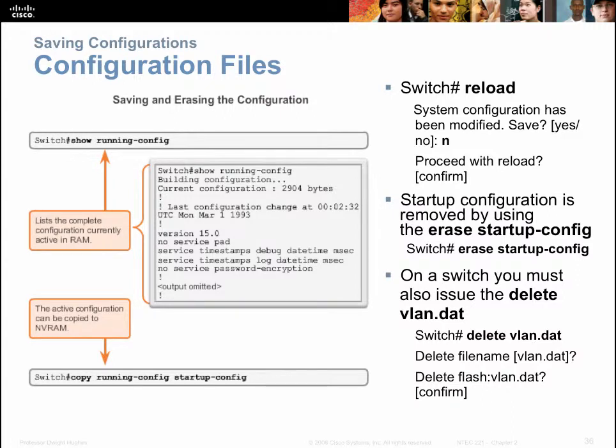The running config is the configuration file that sits in RAM — volatile memory that disappears when the power goes off. As you type commands, they're stored in a file in RAM. We need to copy that file into startup config, which is stored in NVRAM — non-volatile memory. The command is 'copy running-config startup-config', and that copies the running config to the startup config. We can also undo that — if we decide we don't want to keep that file, type 'erase startup-config' to delete it.